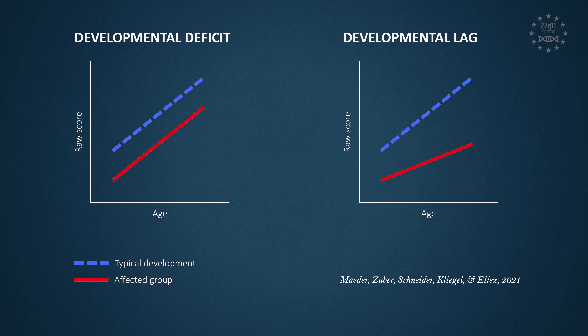We can observe two things: either a developmental deficit — where performance is lower than expected for the age but individuals with the deletion make progress at the expected pace — or a developmental lag, where the pace of progress is less important in individuals with the deletion, and thus over the years the gap widens with the expected performance for age. These results are very important because they help guide clinicians to the most effective strategy for intervention. Areas with a developmental gap that widens with age should receive special attention from an early age and could be interesting targets for cognitive training. Conversely, in the context of a developmental deficit, compensatory strategies could be implemented based on identified cognitive strengths.